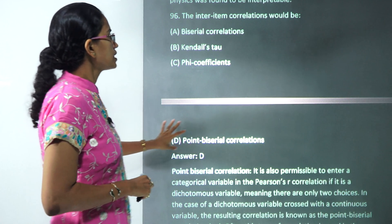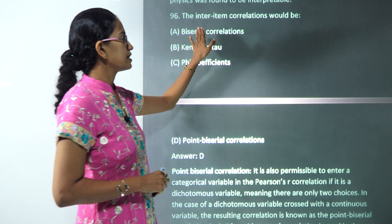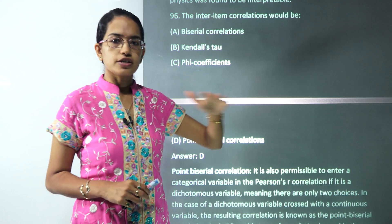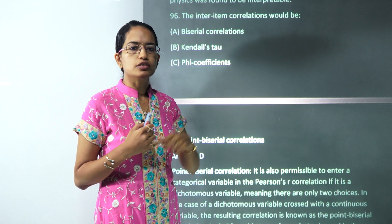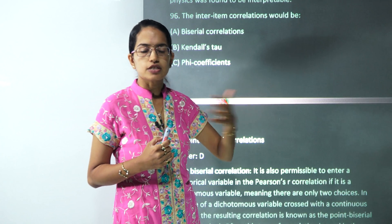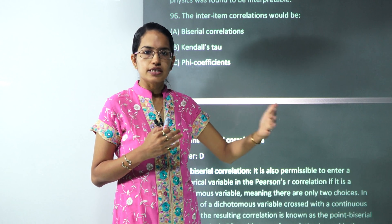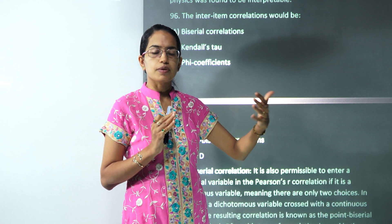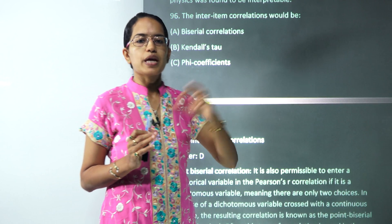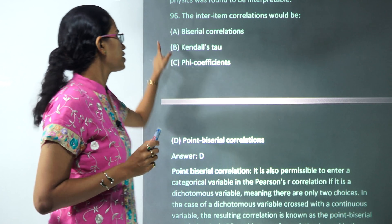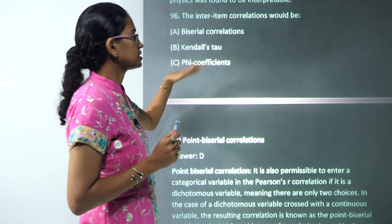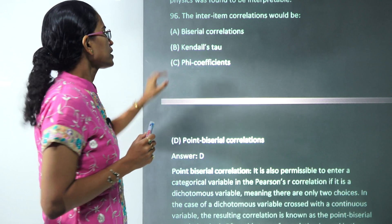It cannot be biserial correlation because under biserial you are treating a continuous variable as dichotomous — for example, depression or cholesterol classified as high or low. Since the answer here is truly dichotomous (correct or incorrect), not a forced dichotomy of an underlying continuous variable, biserial does not apply. Kendall's tau is non-parametric and also does not apply. Point-biserial is the correct answer.